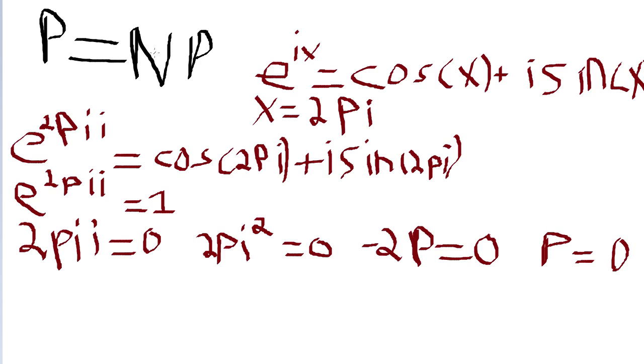Now as you can see, if you sub this into the original equation, what you will have is 0 is equal to n times 0, and this holds true. Therefore, P is equal to NP.